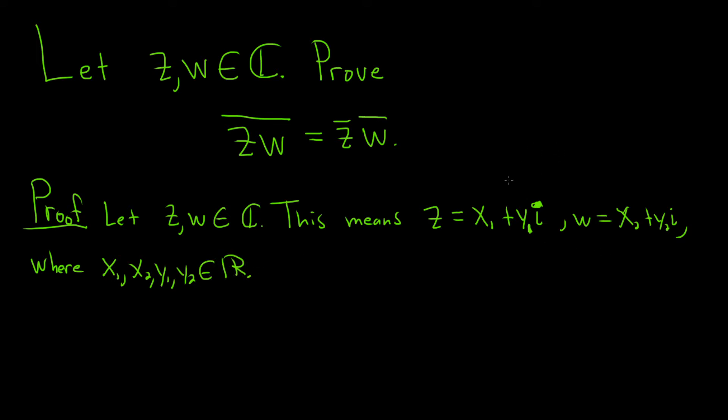Complex numbers can be written in that form, right? a plus bi. Here, I'm just using x and y because we have two of them. Now we're just going to compute both sides of this equation and just basically show that they're the same. Let's start with the left-hand side. So, in order to compute the left-hand side, we first have to multiply them. Let's do that.